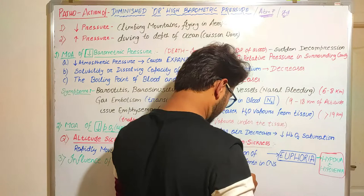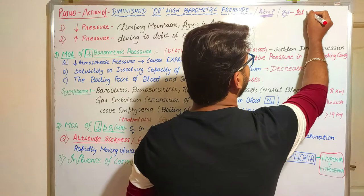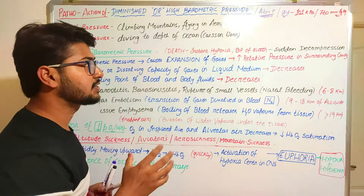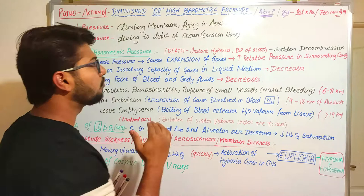In standard units, atmospheric pressure is 101 kiloPascals or 760 millimeters of mercury. We have already read this in physics. These are the important standard units we should remember.